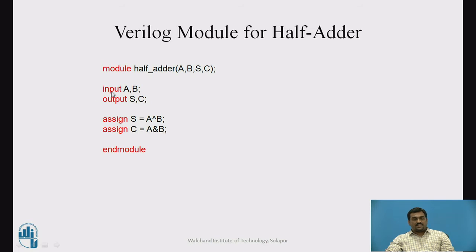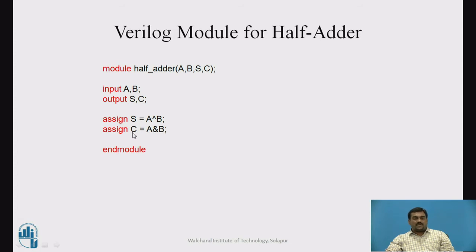We explicitly specify which identifiers belong to input and which are output. We write input A, B; — do not forget the semicolon at the end. In the next line we write the assign keyword: S = A ^ B; — the caret symbol in Verilog represents the XOR operation, so the XOR of inputs A and B is assigned to S, which is the sum. Similarly, the next line assigns C = A & B; performing the AND operation between A and B, with the result assigned to capital C.